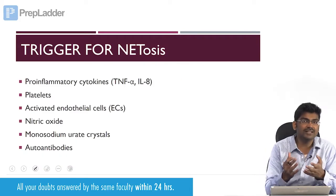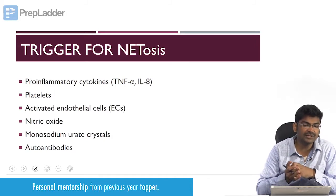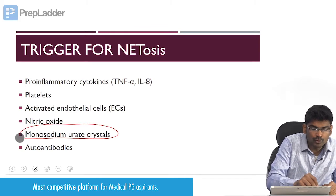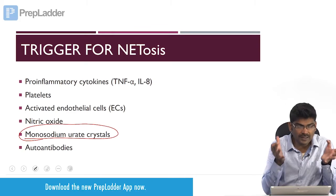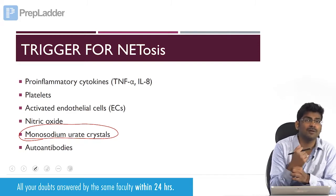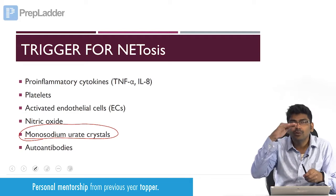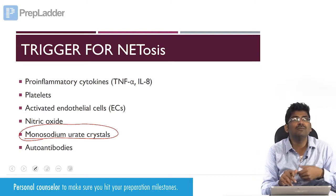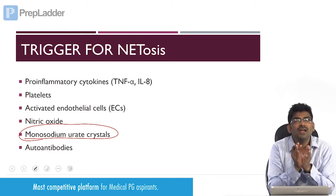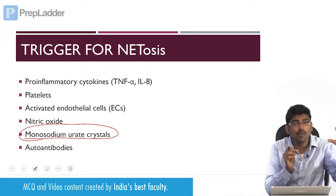NETosis is triggered by pro-inflammatory cytokines like TNF-alpha, interleukin-8, platelets, activated endothelial cells, nitric oxide, and monosodium urate crystals. In gout, there is accumulation of monosodium urate crystals, which elicit this inflammatory response. That is why in an acute attack of gout, the primary treatment is to stop the inflammation — that is why we give colchicine. Colchicine is a mitotic tubulin inhibitor; it will inhibit chemotaxis and pseudopod formation.